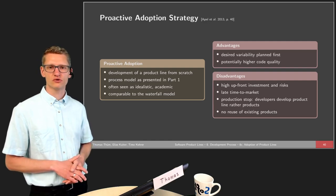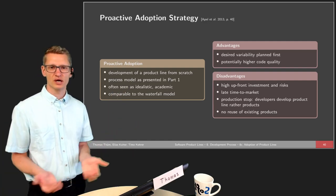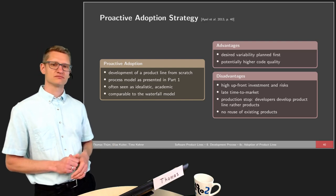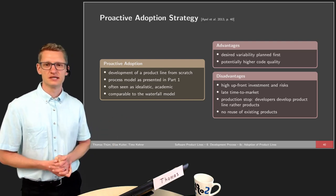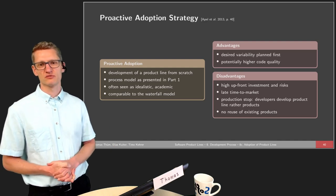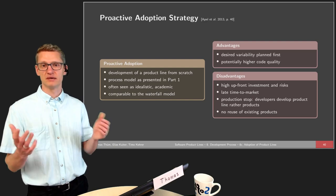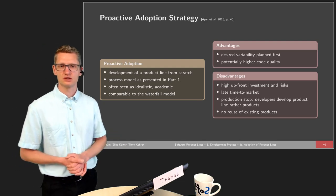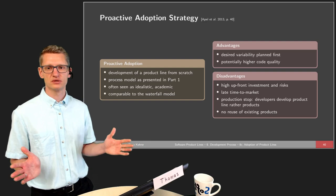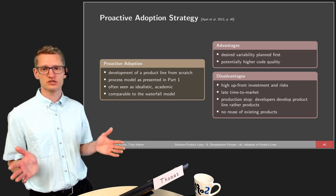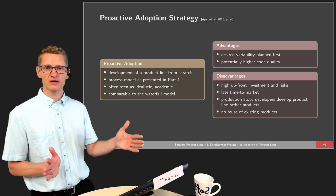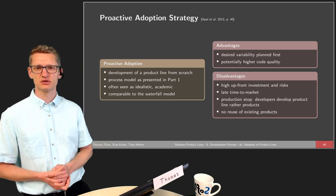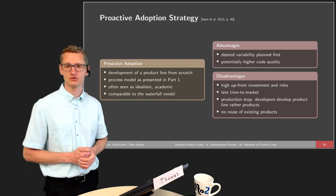The proactive strategy is comparable to the waterfall model, where you capture all requirements first, then do all the design, then all the implementation — but then you might discover bad decisions or conflicting requirements and need to go back. Similarly, there are some iterations going on even in domain engineering. Like the waterfall model, this is a realization of one step after another without building small prototypes to verify feasibility, making for a high upfront investment.